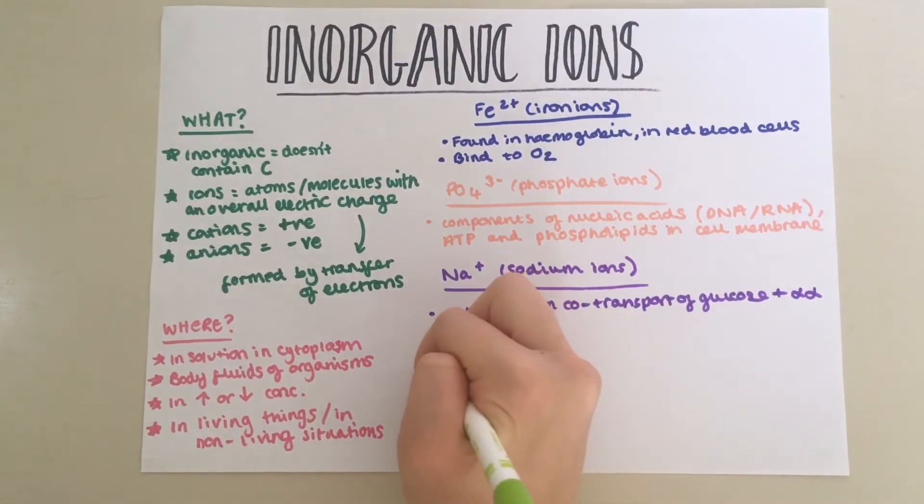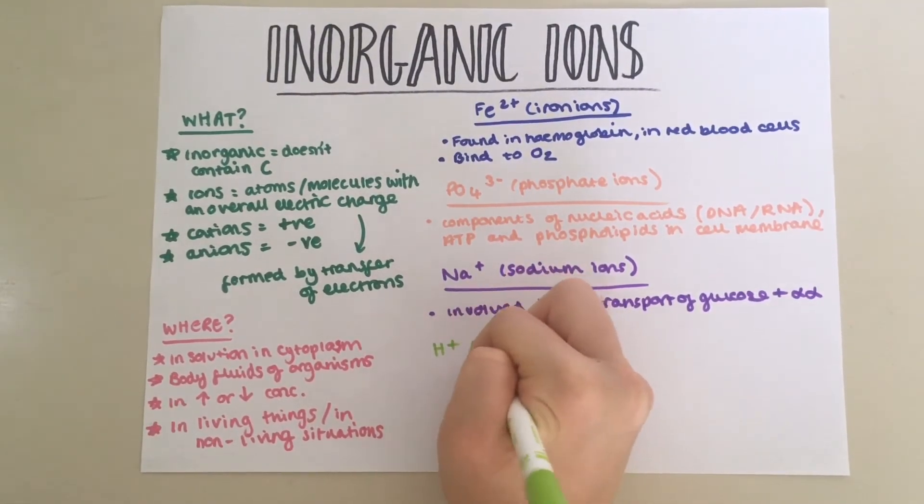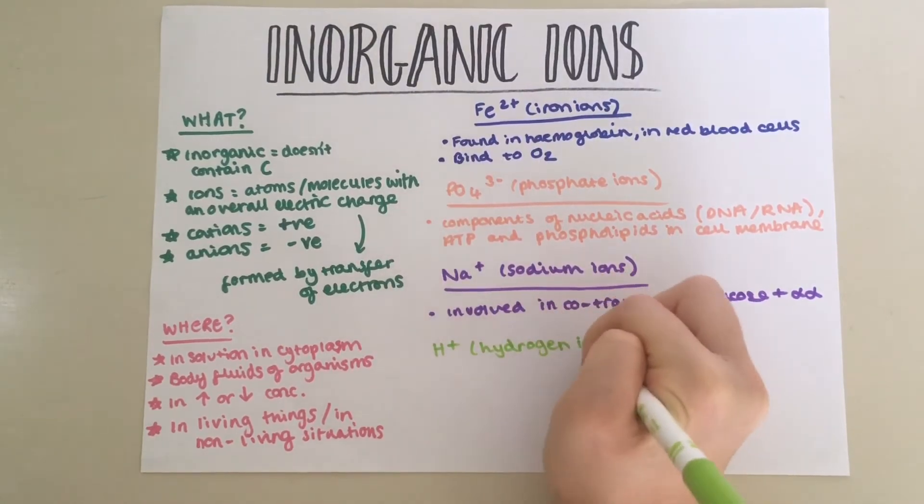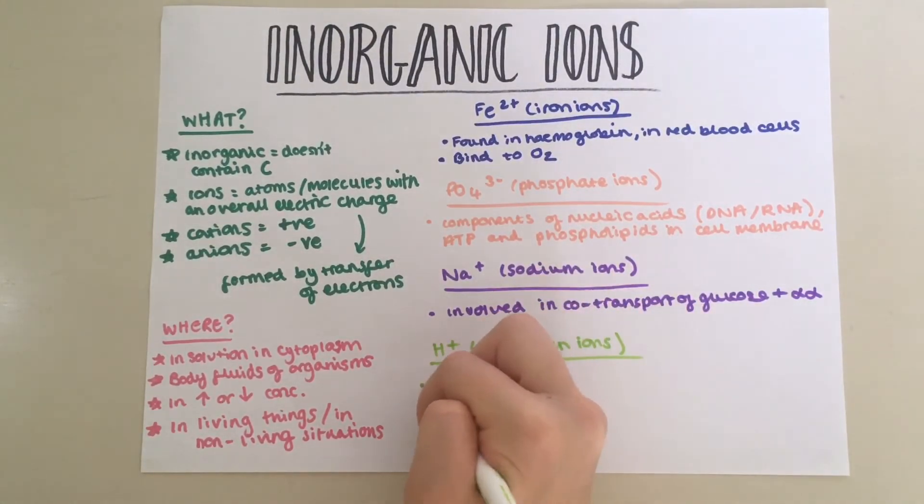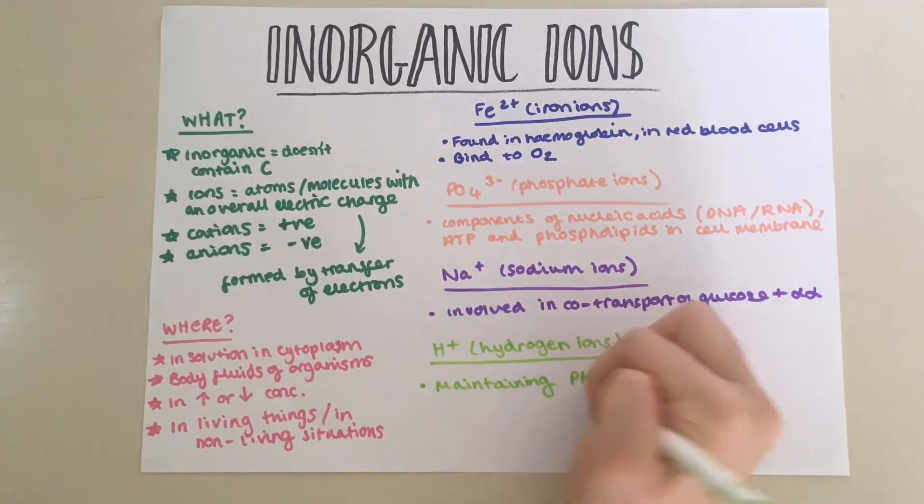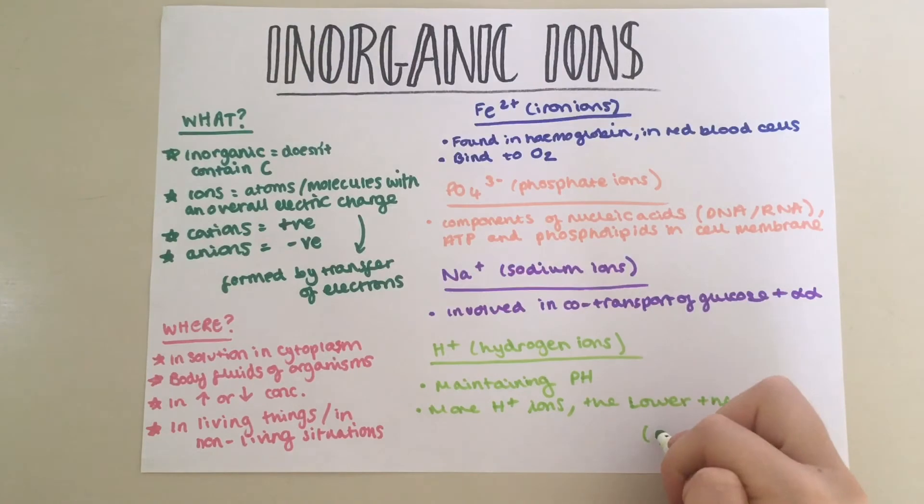And last but not least, we've got H+, hydrogen ions. Hydrogen ions are important in maintaining pH. The more H+ ions there are, the lower the pH, i.e. it's more acidic.